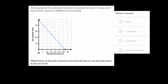So which feature of the graph represents how long Nirmala can use the lamp before it runs out of oil? So when it runs out of oil, that means the oil volume would be zero. So we go to our y axis, we find the oil volume of zero, that's right here. And then we just carry over and figure out where our blue line crosses over an oil volume of zero. And so that'd be right here.